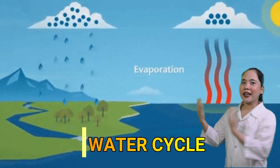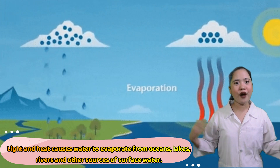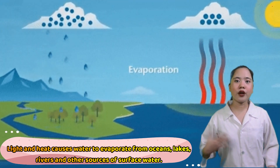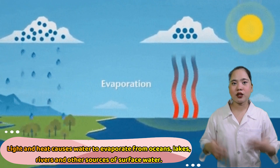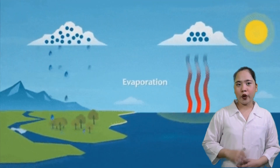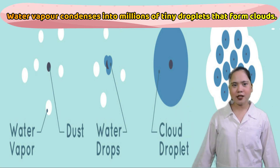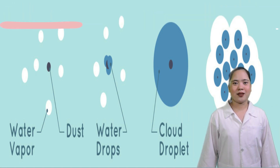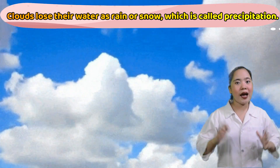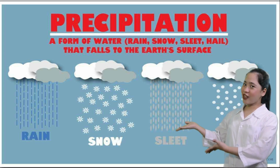The water cycle: light and heat cause water to evaporate from lakes, rivers, and other sources of surface water. Water vapor condenses into millions of tiny droplets that form clouds. Clouds release their water as rain or snow, which is called precipitation.